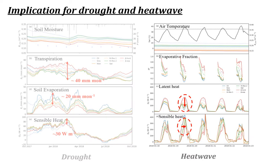For heatwaves, we found that parameter and resistance selection is also critical. Different parameter resistance choices lead to a remarkable range in evaporative fraction, and over 100 W/m² difference in sensible and latent heat fluxes. This means the strength of evaporative cooling varies greatly among parameterizations, and this difference can propagate to the lower atmosphere and further affect heatwave evolution.